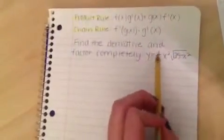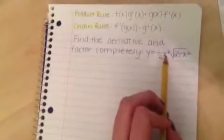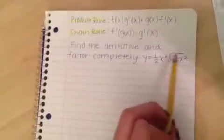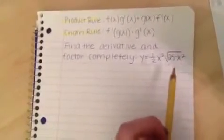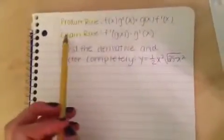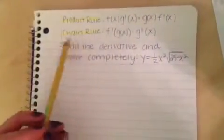The problem is y equals a half times x squared times square root of 25 minus x squared. And then we have our two equations up here that we're going to need throughout this problem.